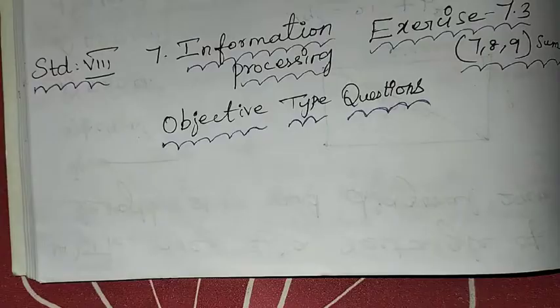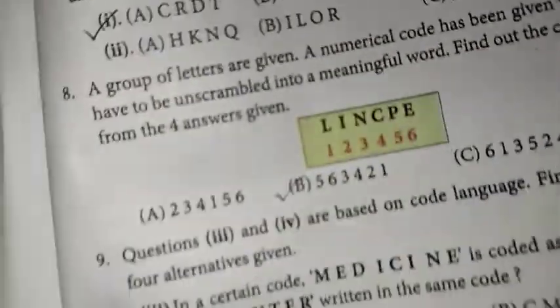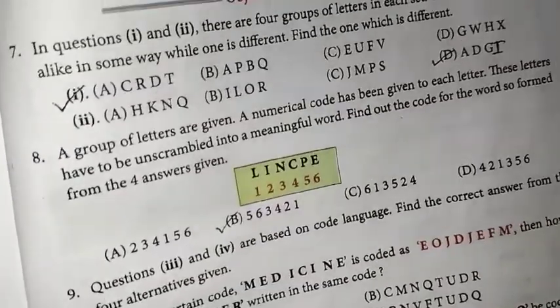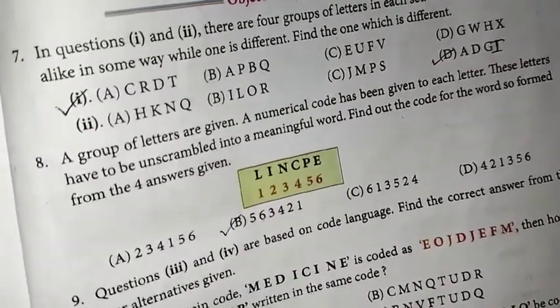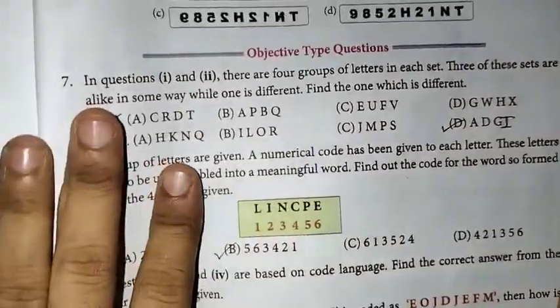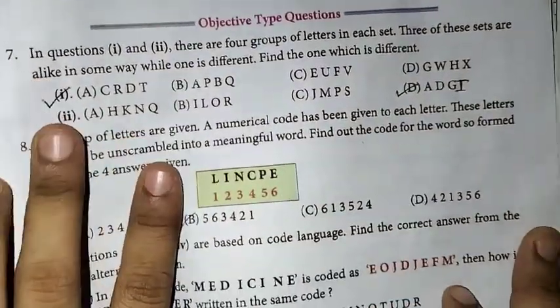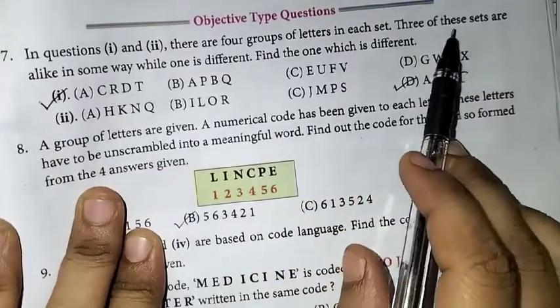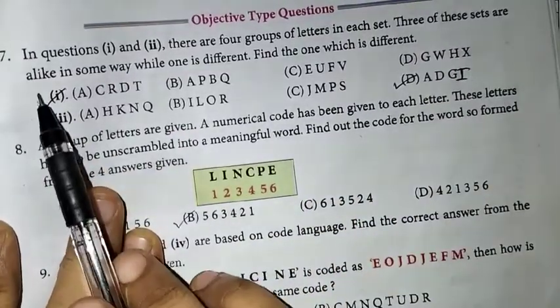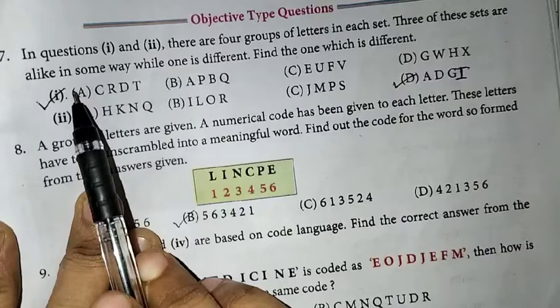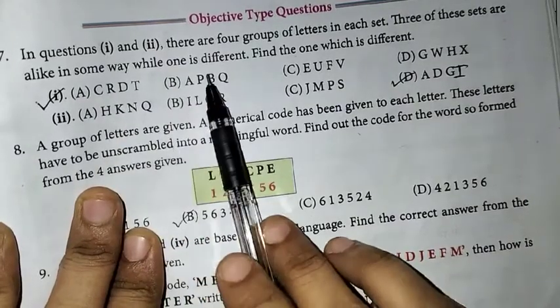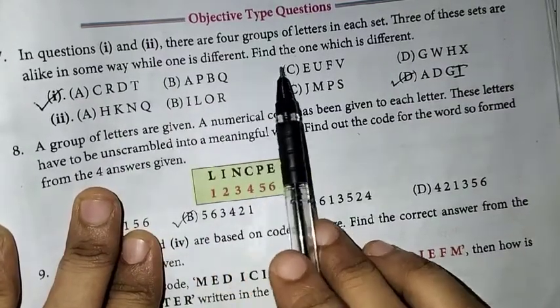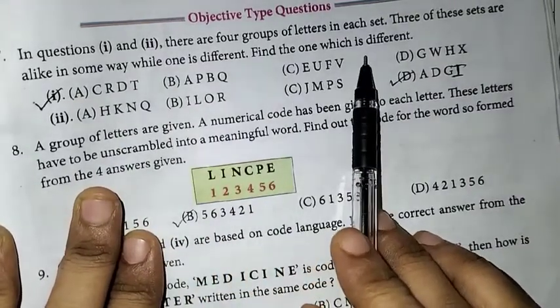7th sum: In questions 1 and 2, there are 4 groups of letters. In each set, 3 of these sets are alike in some way, while one is different. Find the one which is different.